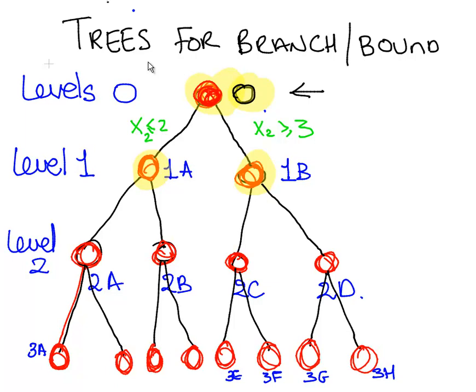So what we're going to do here is branch on the variable x2. We're going to impose one restriction that x2 has to be less than or equal to 2. This is node 1A on our tree. And the counterpart is that x2 has to be greater than or equal to 3, which is problem 1B. We're going to look at these two problems in this presentation.